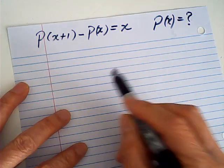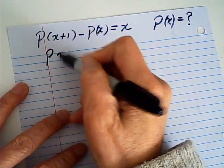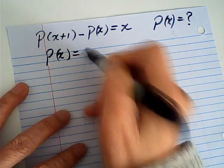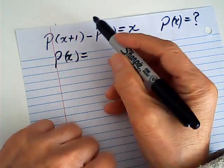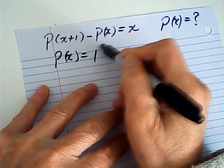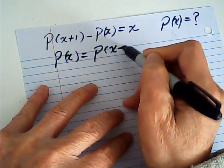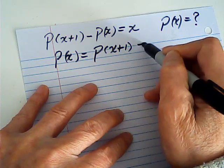From this given equation, we know that P(x) is equal to P(x+1) minus x.